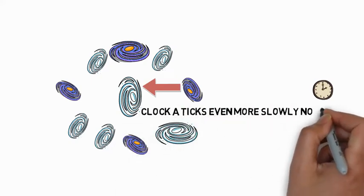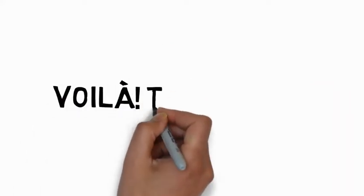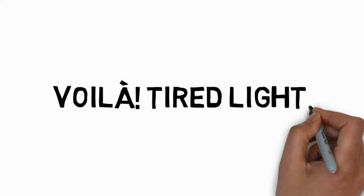This is because there is no difference between the ticks of a clock and the frequency of a light wave. Both are simply ways of measuring time. This means that light tires with distance.